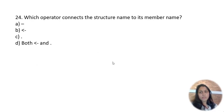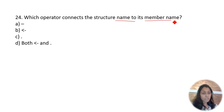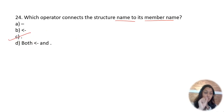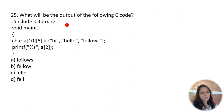Which operator connects the structure name to its member name? We use the dot operator to connect the structure name to its member name. Remember: dot operator is used for structure member access.